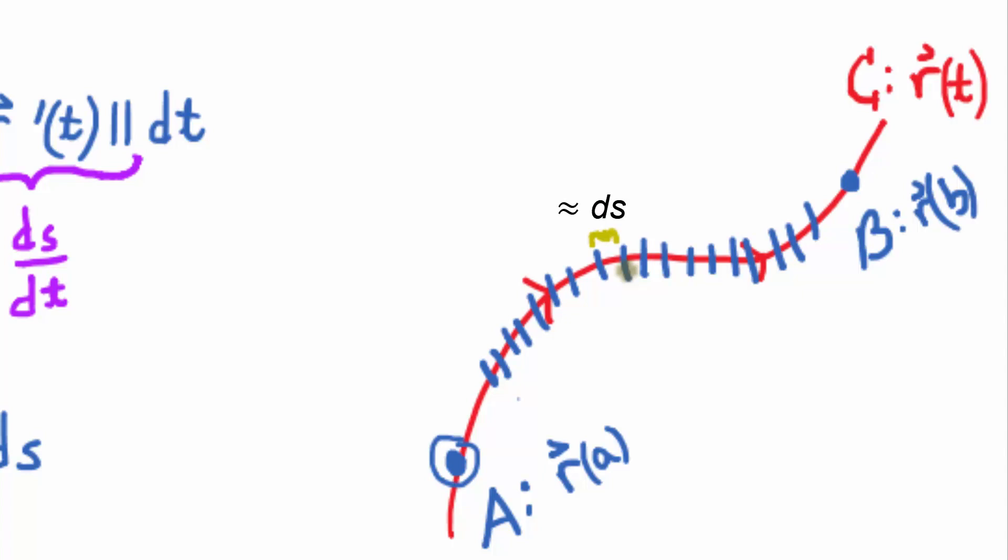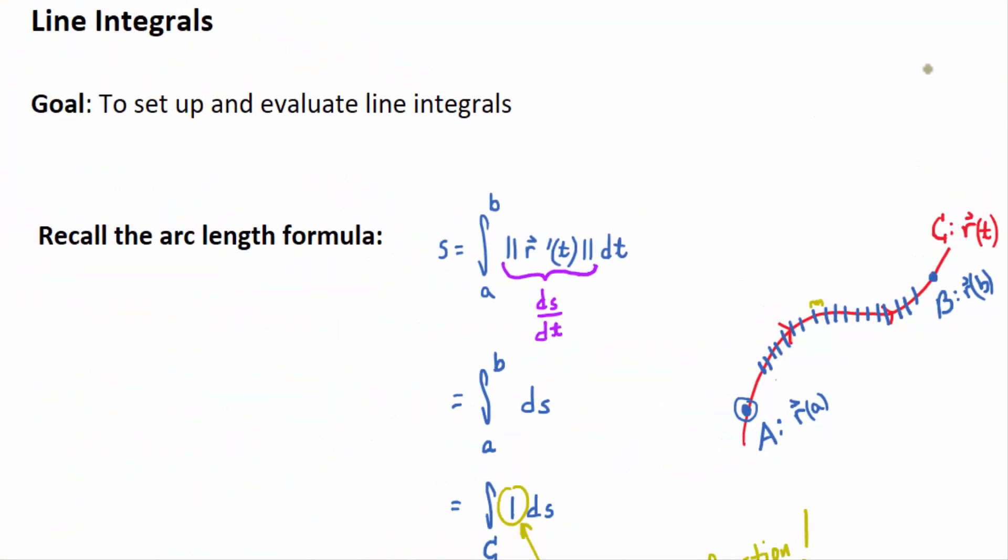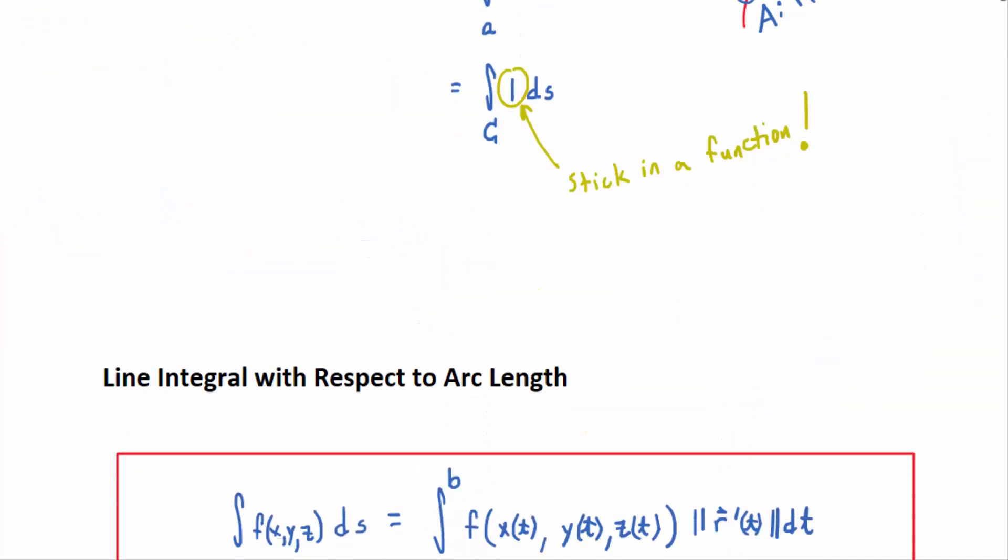So the idea is that if the integrand is one, then the integral of one ds just sums up all of those infinitesimally small pieces of arc length and you just get the total length of the arc.